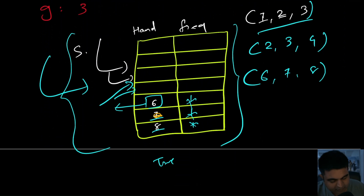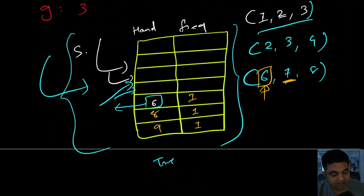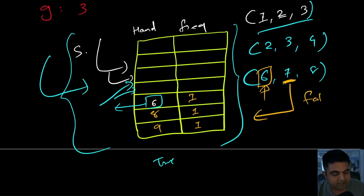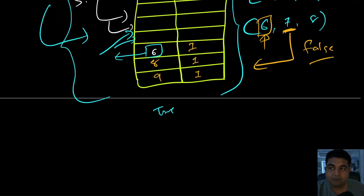To illustrate the false case: if instead of 7 we had 9, the TreeMap would contain 6, 8, and 9 each with frequency 1. Starting point is 6, we look for 7, but 7 is not present. The moment we identify that a required element is missing, we return false immediately. This is the scenario under which we return false.